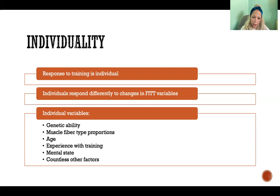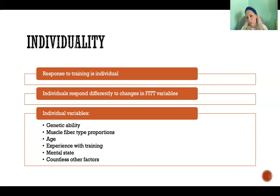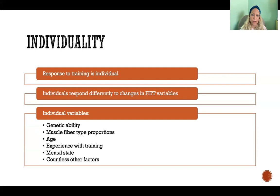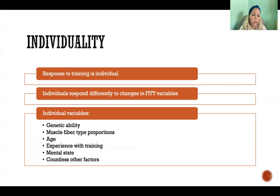Factors include genetic ability and muscle fiber type proportions. Although most of us have roughly an even distribution of fiber types, some have a slightly greater proportion of one or another — and in elite athletes, this can be quite extreme. Age affects how we respond to training, as does past experience: a lifelong marathon runner will respond differently to strength training than someone who's been strength training their entire life.